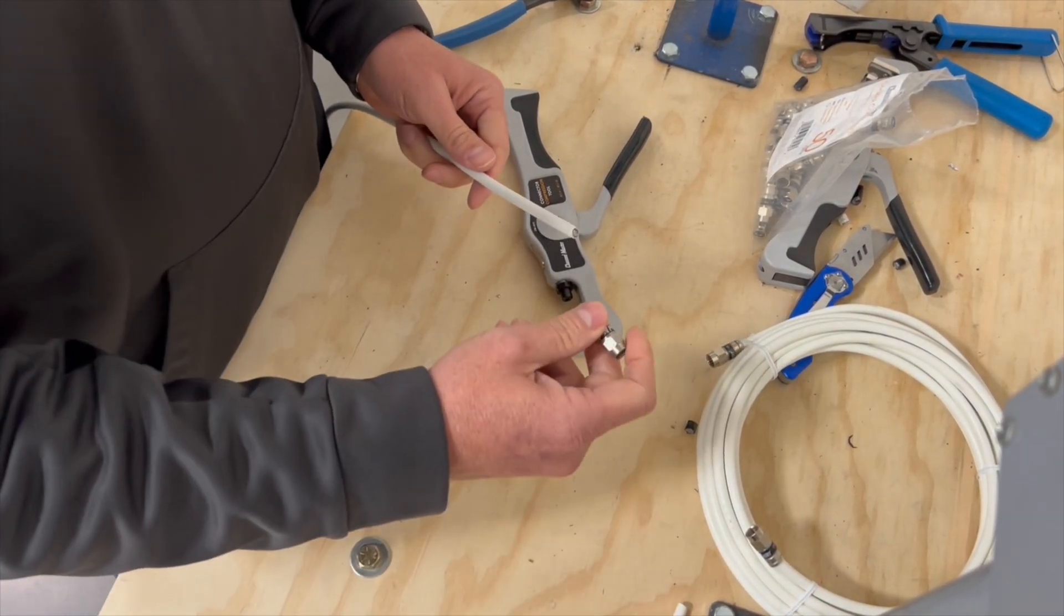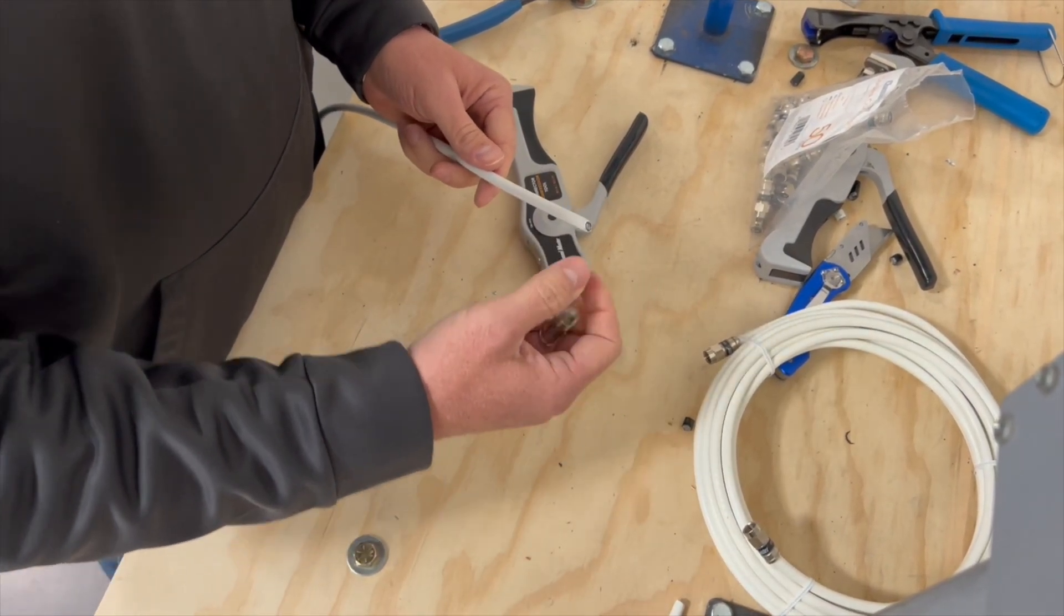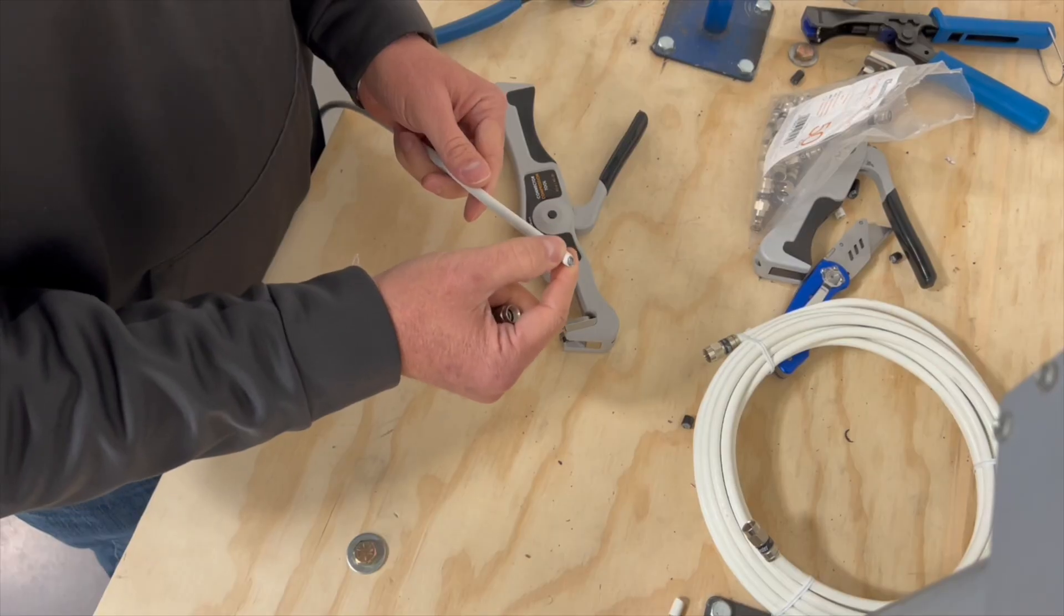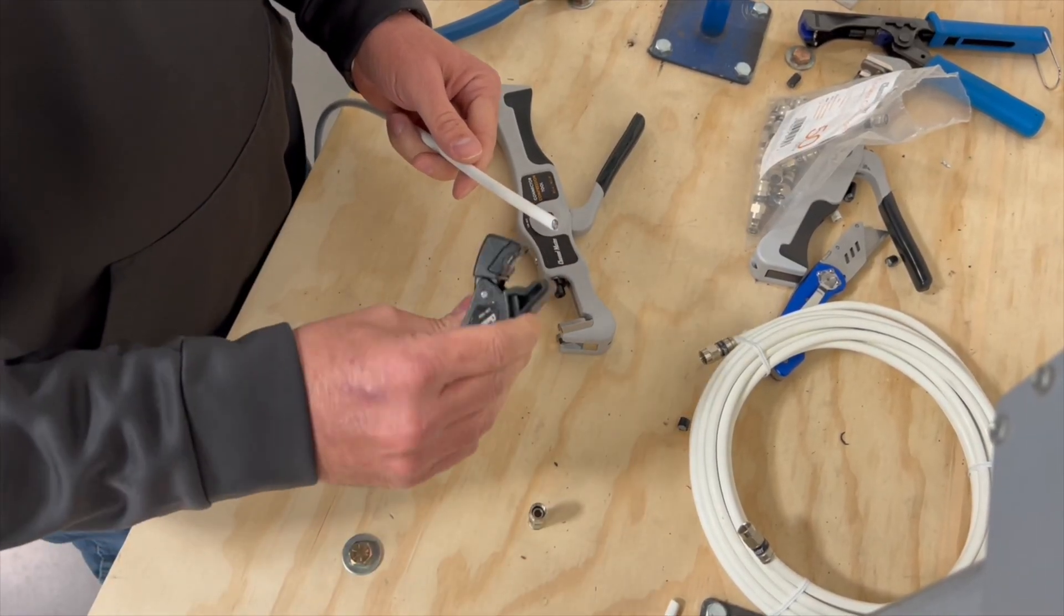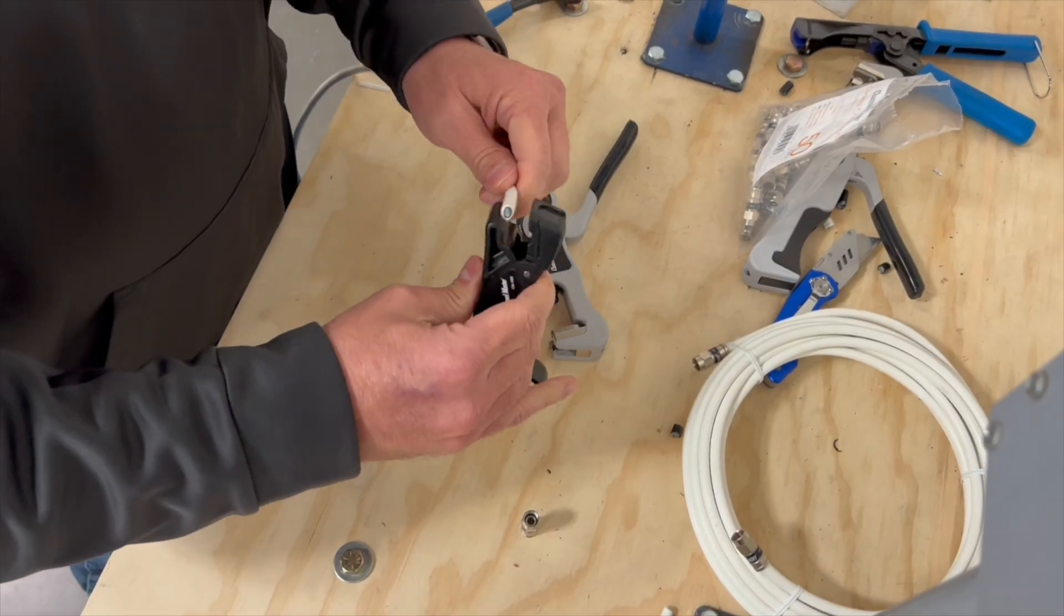One of the critical things about this connector or all connectors is you need to make sure that the coaxial cable is prepared correctly using a coax stripper. So we'll use this strip right here.